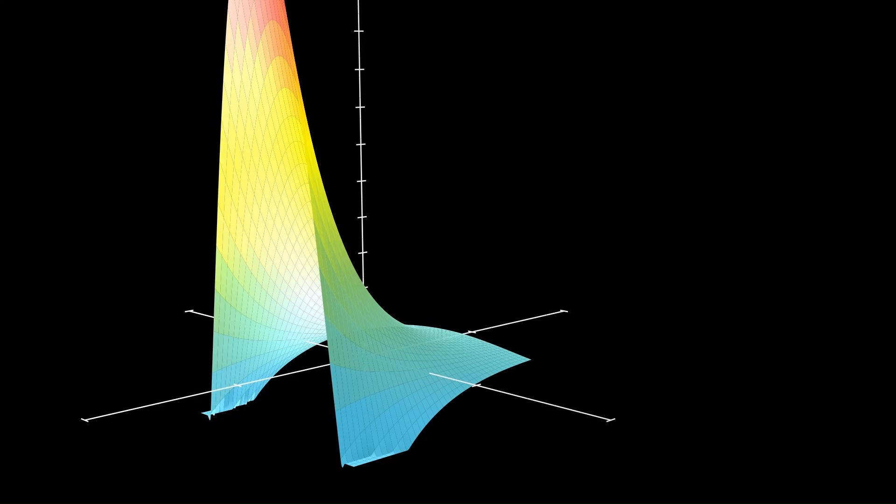This result is important because it tells us how the function is going to behave around the pole. In this case, the pole is at z equals 1 because that creates a discontinuity.